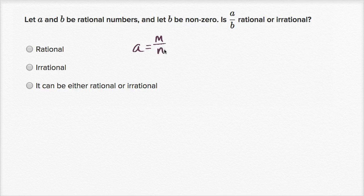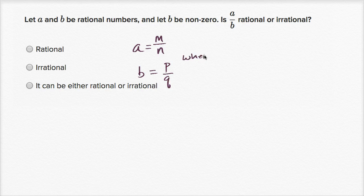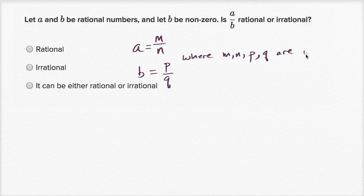So I could write A is equal to M over N. And same thing about B — I could write B as being equal to P over Q, where M, N, P, and Q are integers. By definition of what a rational number is. They're telling us these numbers are rational so I can express them as these type of ratios.